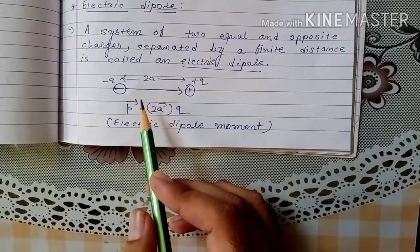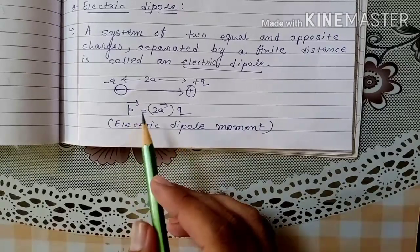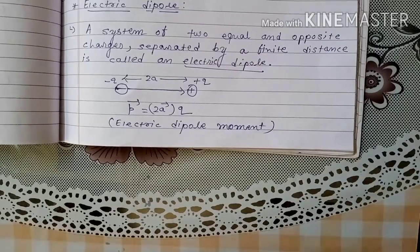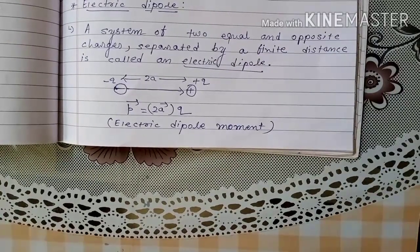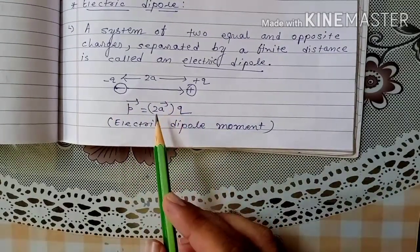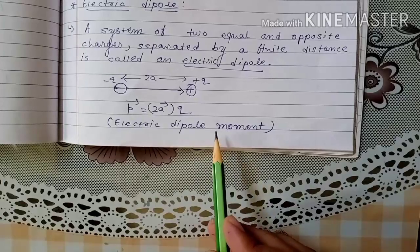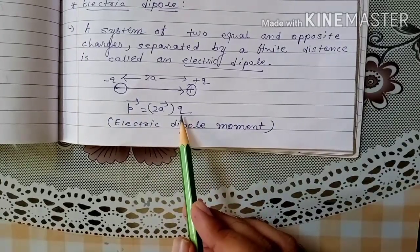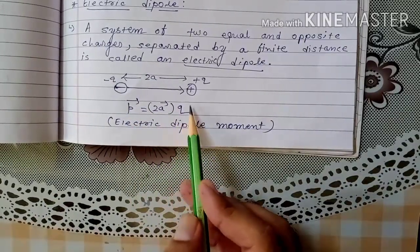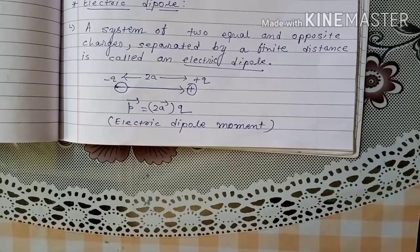The strength of this dipole is measured by a physical quantity called Electric Dipole Moment, denoted by small p. Electric Dipole Moment is the product of the magnitude of either charge of the dipole and the separation between them. So p is equal to q into 2a.